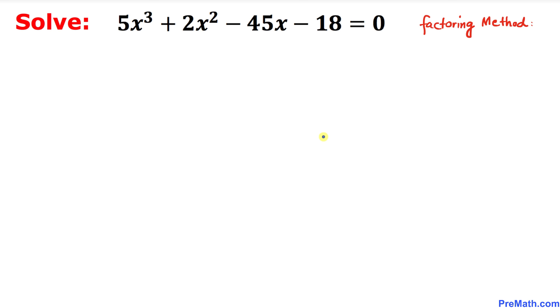Welcome to PreMath. In this video tutorial we are going to solve this cubic equation 5x³ + 2x² - 45x - 18 = 0 by factoring method.